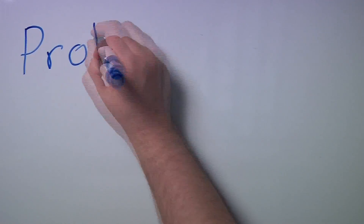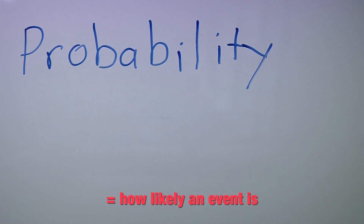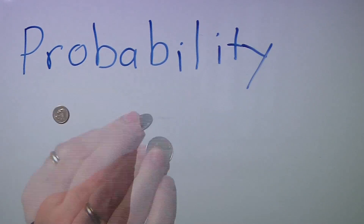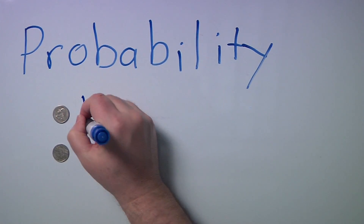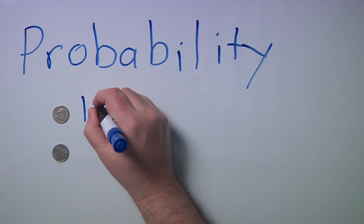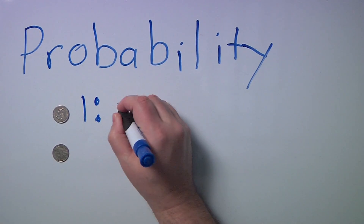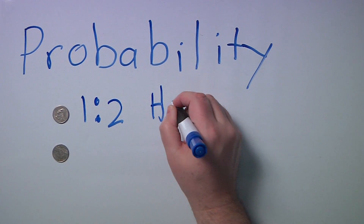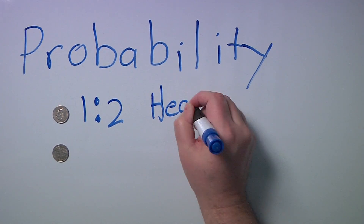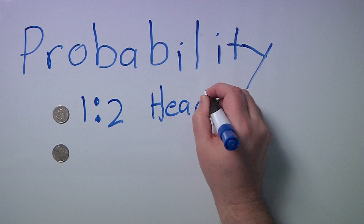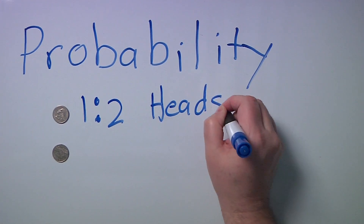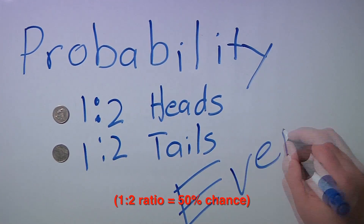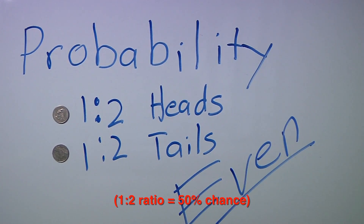Probability is a measure of how likely an event is. Let's look at the probability of coin flips. If we want to know the probability of heads, there's only one way for heads to land up out of two possible outcomes — heads or tails. So the probability is a one-to-two ratio. The same is true for tails: one-to-two. It's an even chance.